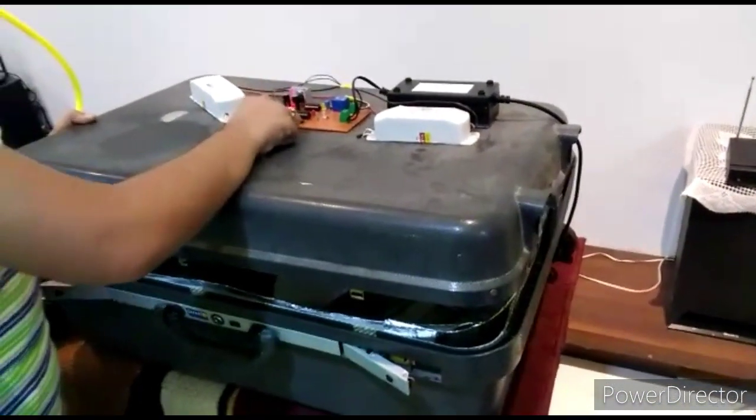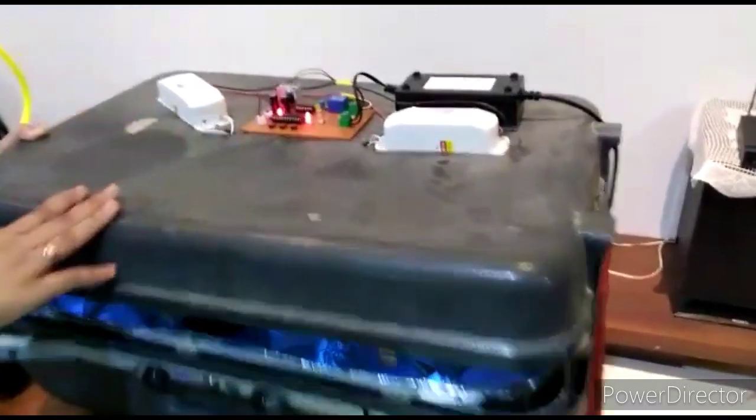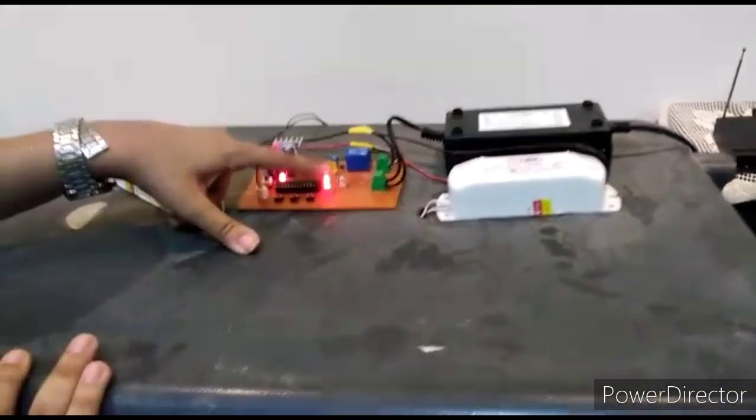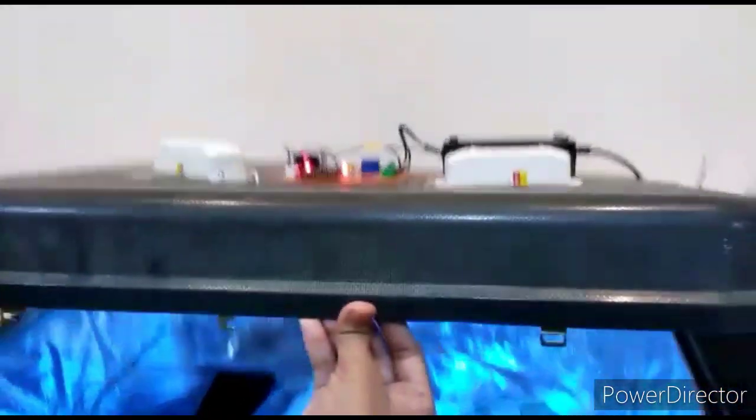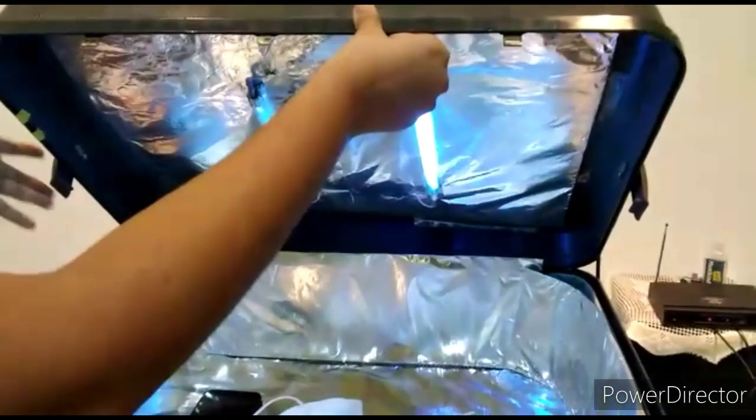I have placed these items in the chamber. Now, I will turn on the gadget and set the timer to 1 minute. The red LED is indicating that the 1-minute timer is in on position. Thus, the UV lights have also turned on.